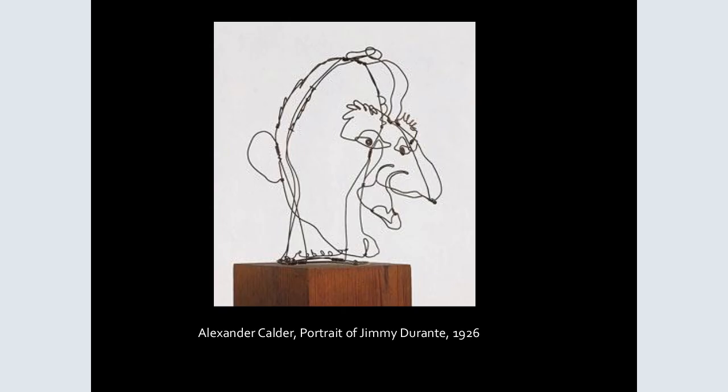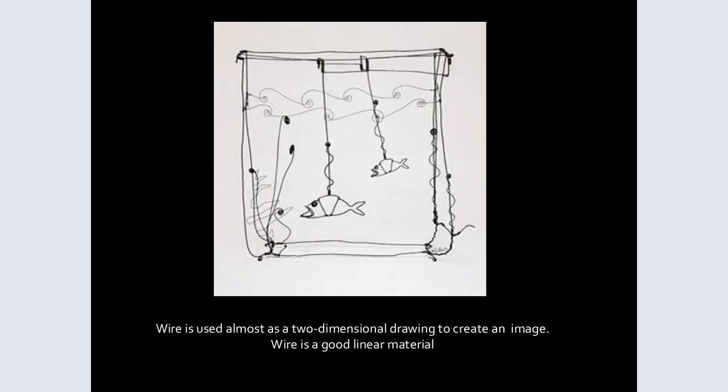Here's a close-up of it. You will do a similar assignment to this. Here's another Calder piece showing how far back his work goes — this is from 1926. Wire is used almost as a two-dimensional drawing to create an image. Wire is a good linear material, and that's the material we're going to be using for this next project.